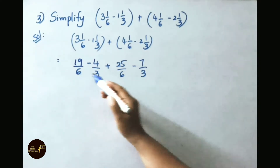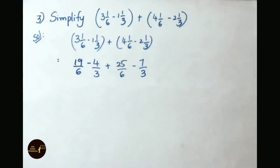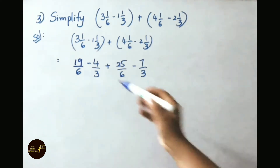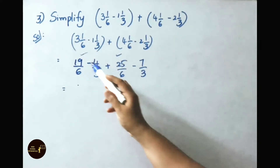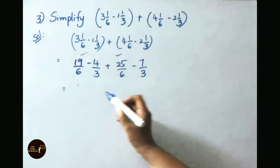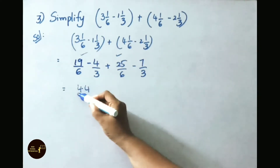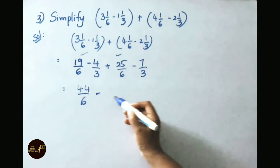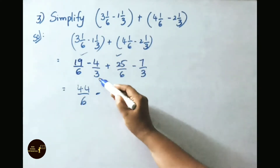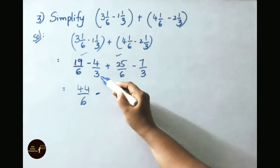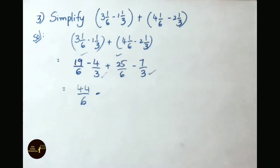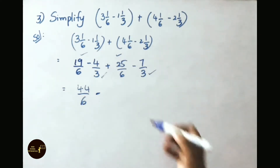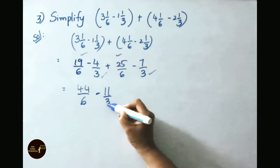Here the denominators of the first and third fractions are both 6 — these are like fractions. Let us add them: 19 plus 25 is 44 by 6. Now add the other two like fractions with denominator 3: 4 by 3 and 7 by 3. 4 plus 7 is 11, so write down 11 by 3.